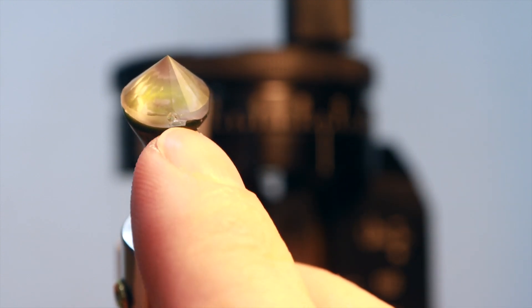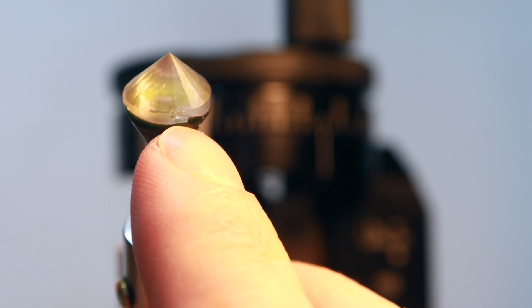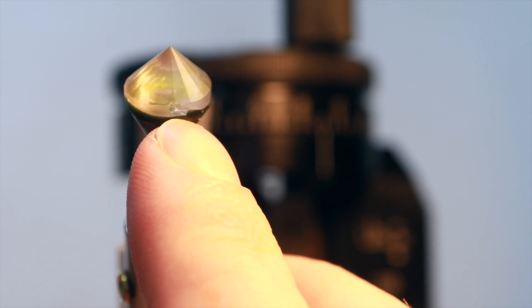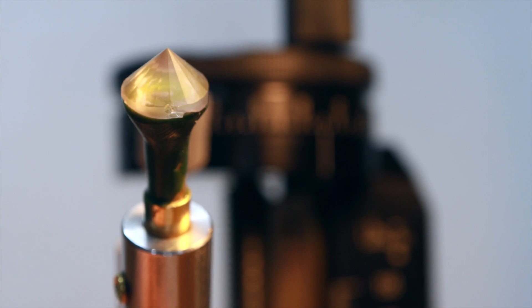Here you can see where there's a chip in the stone and this is where I haven't cut deep enough in the preforming stage. This will be cut out when I cut the girdle facets.